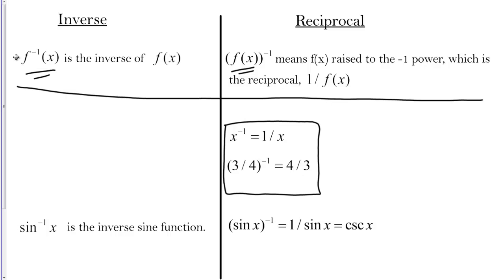Or three fourths to the negative one, that's just the reciprocal, four thirds. That's kind of a simpler situation. You don't have to worry about inverses in that case because the inverse doesn't make sense, it's the reciprocal.